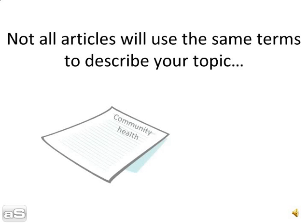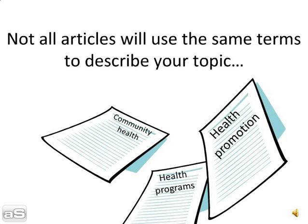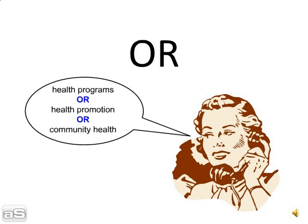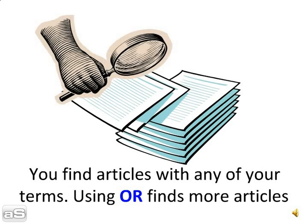However, not all articles will use the same terms to describe your topic. This is when you need OR. This means you find articles with any of your terms. Using OR finds more articles.